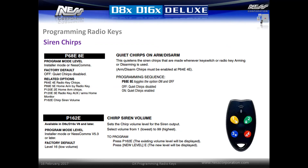Activating option p68e 8e will reduce the siren chirp volume by about half. Optionally, a new option in the latest version D8 panels allows siren chirp volume to be set specifically. Enter option p162e, then enter the chirp volume between 1 and 99, with 1 being the lowest and 99 being the highest.